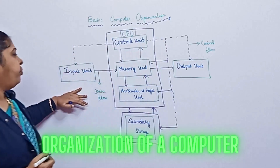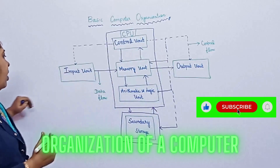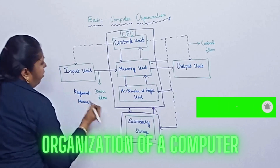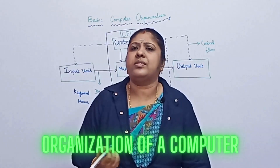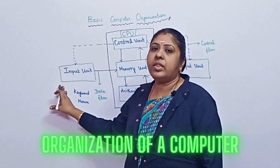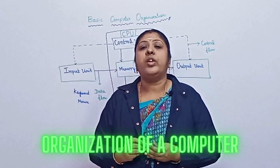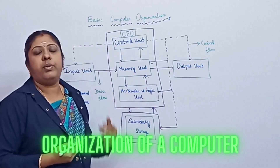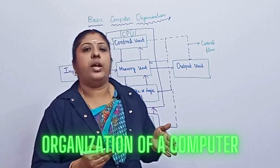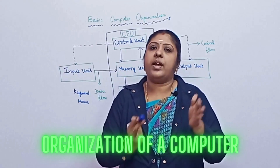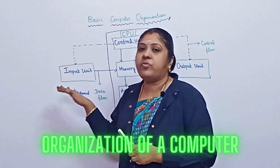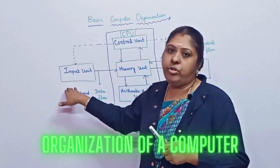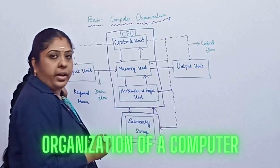First, the input unit. The input unit consists of a keyboard or a mouse — these are the two famous input devices. Other devices include joystick and so on. The purpose of the input unit is to give data and instructions to the computer. For example, if you want to multiply two numbers, you cannot just tell the computer verbally; you have to write a program with instructions understandable by the computer. The input unit is used to feed that information.